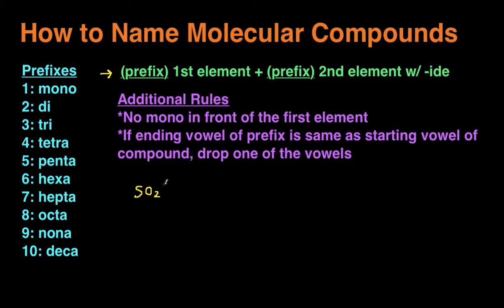So let's apply those rules and name this molecular compound SO2. We start by identifying the two elements: we have sulfur and we have oxygen. The first element you just write the name of it, and then the second element you write the name but add '-ide' to the end. The root of oxygen is 'ox,' and you add '-ide' to the end, making it 'oxide.'